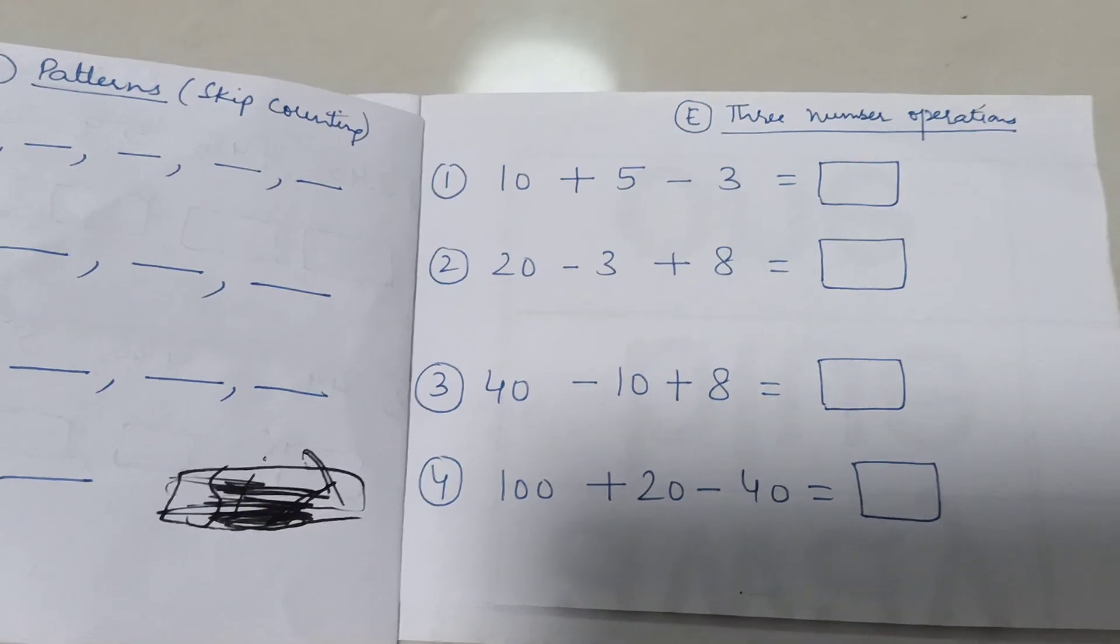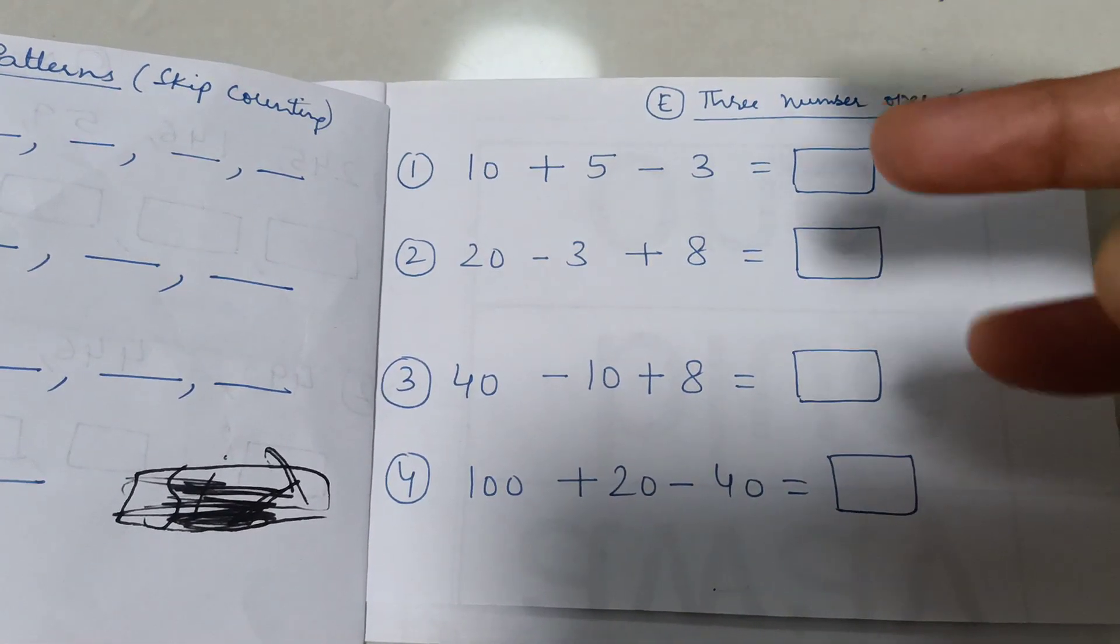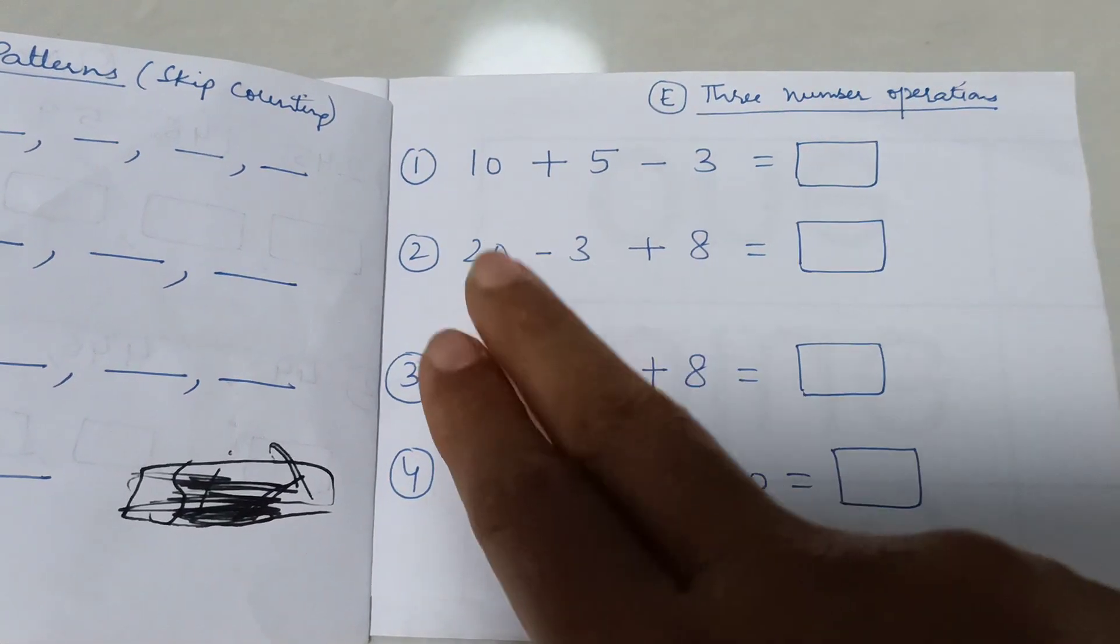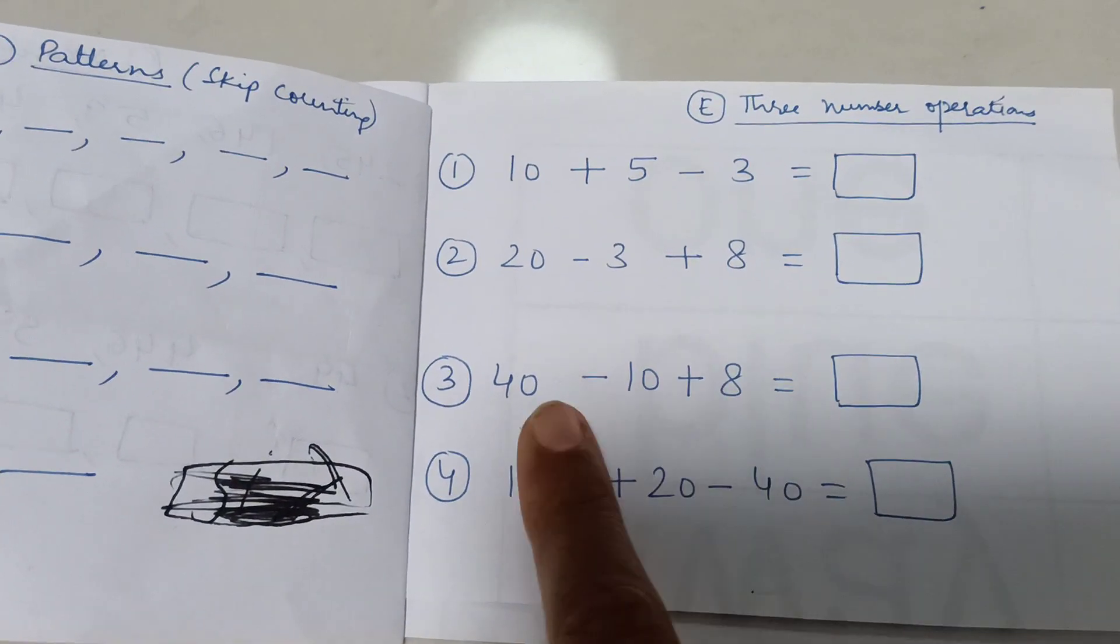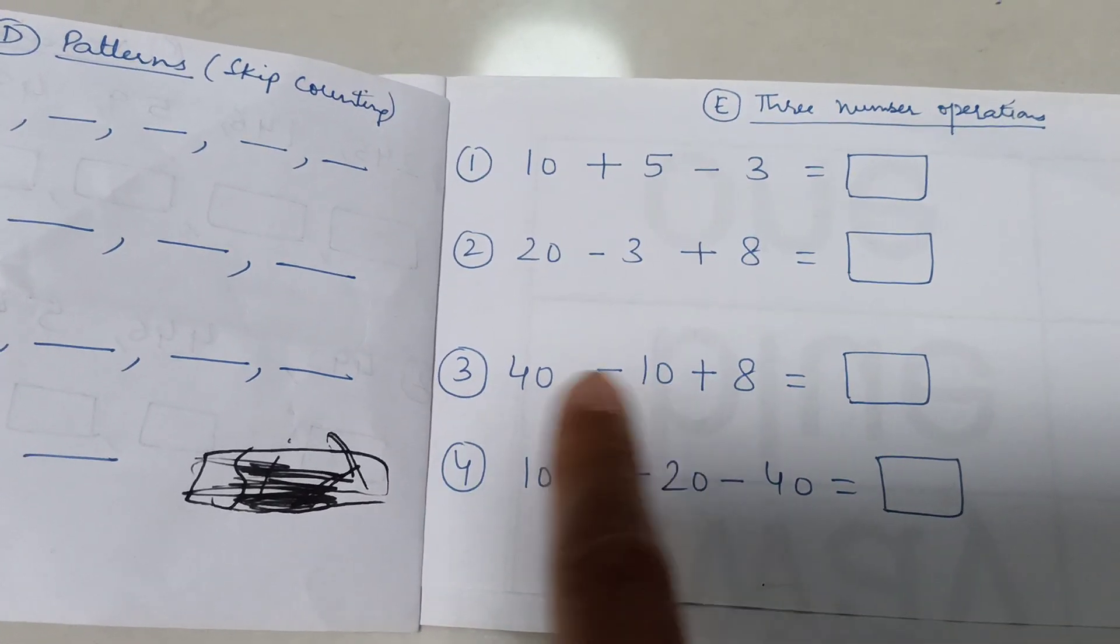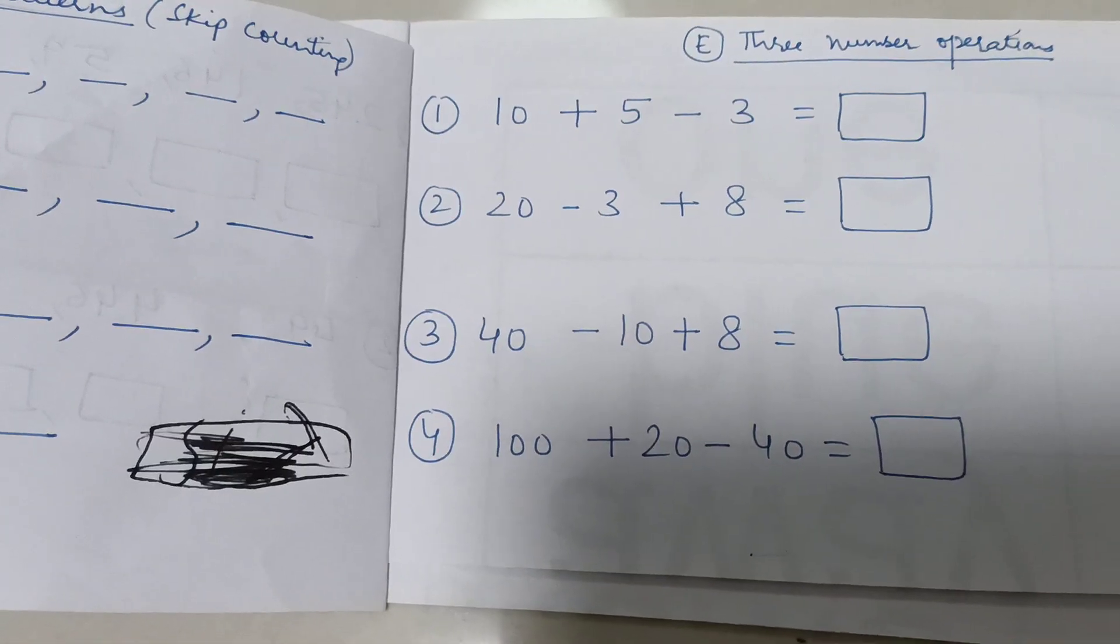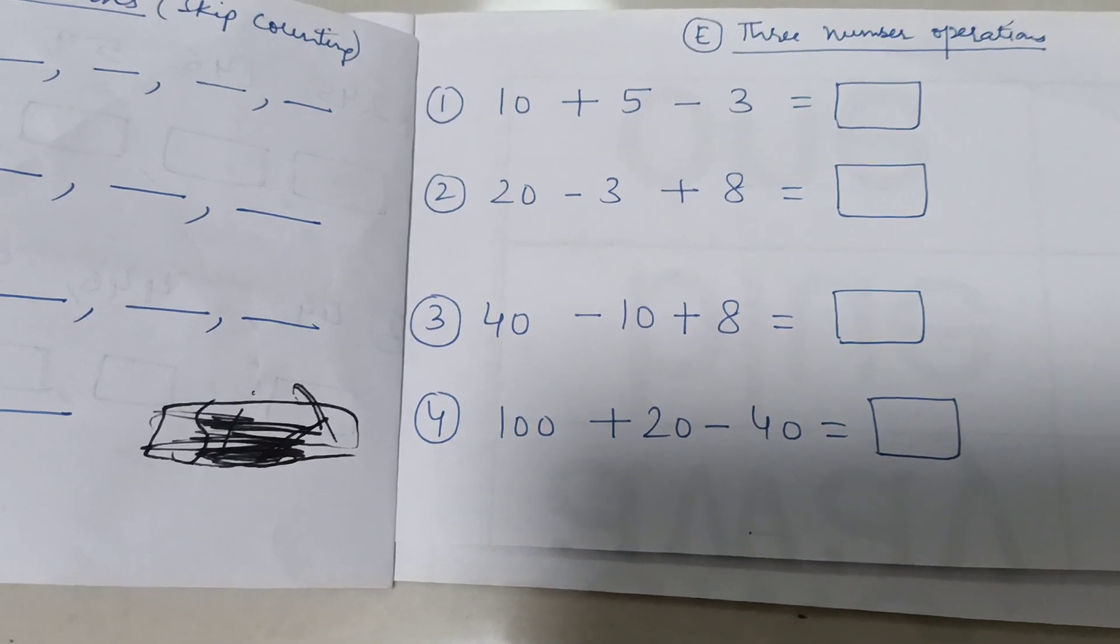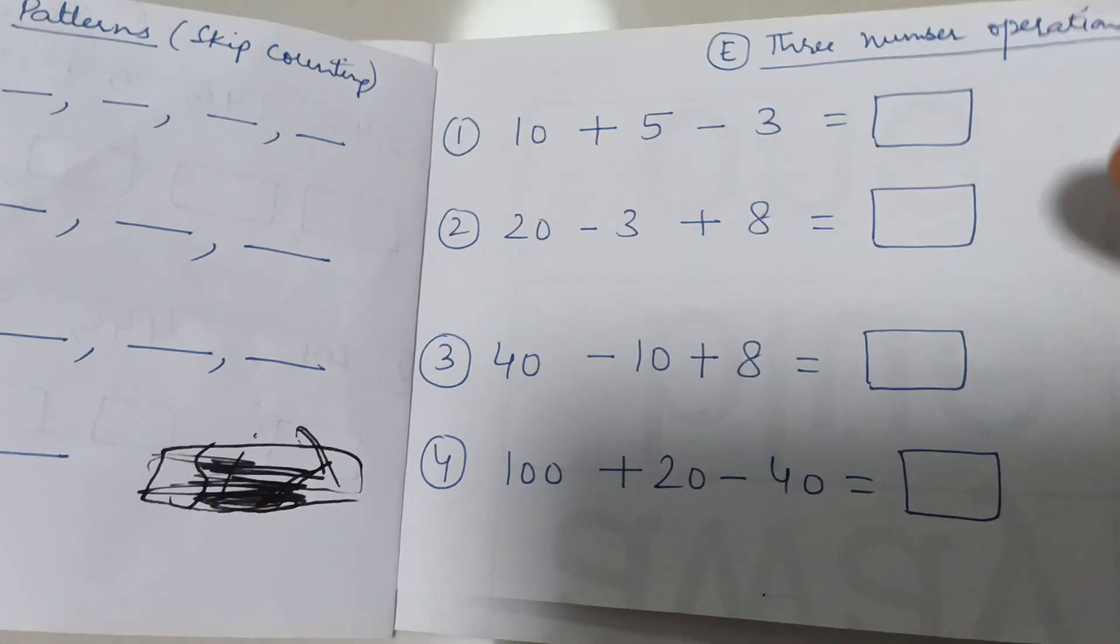Here we are doing 3 number operations. They are simple, but we have done only 2 number addition till now with 2-digit numbers. Like she has done 2 plus 3 plus 5. Like 40 minus 10 plus 8, this will be a little complicated because we are dealing with double digit. She has never done 3 number operations with double digit numbers. This is called 100 plus 20, she has to think in mind 120, minus 40, then removing that. I think I need to help her with these kind of questions.